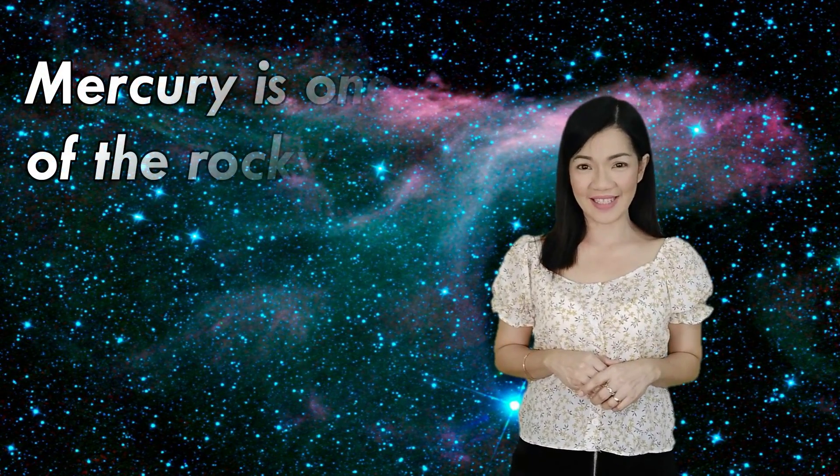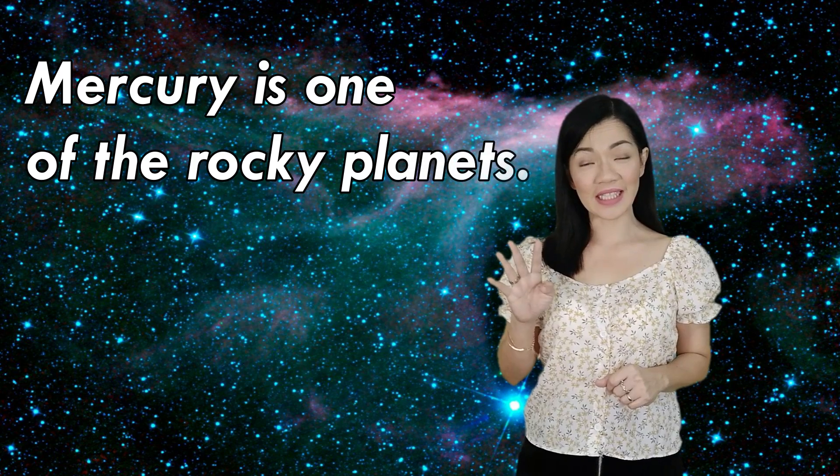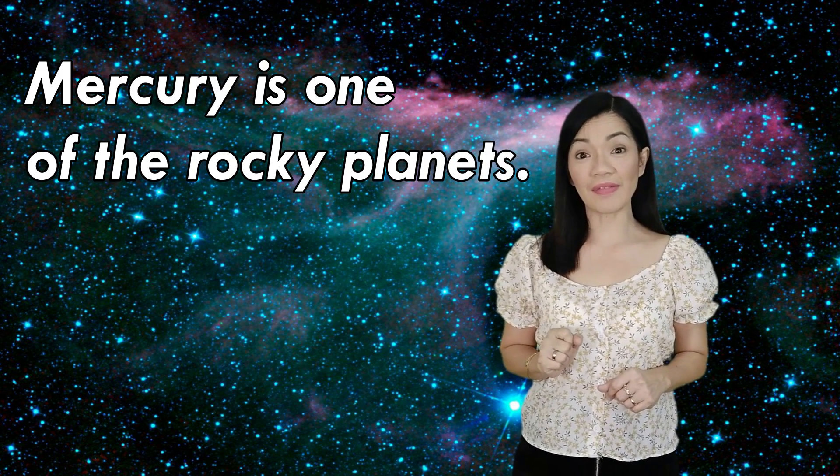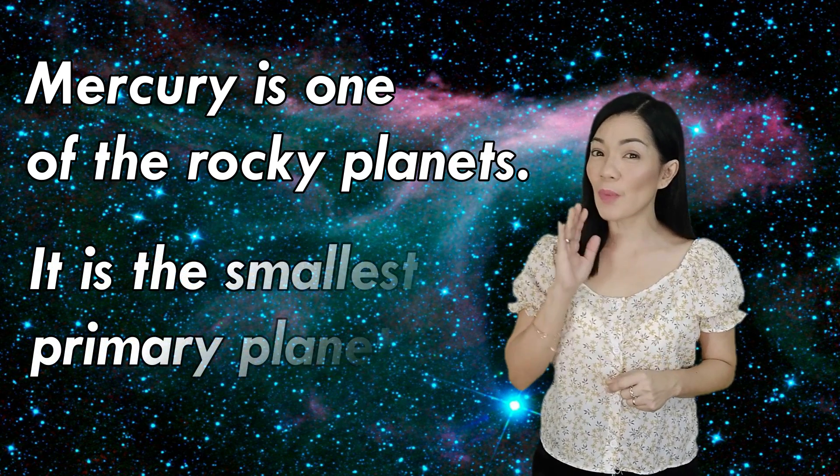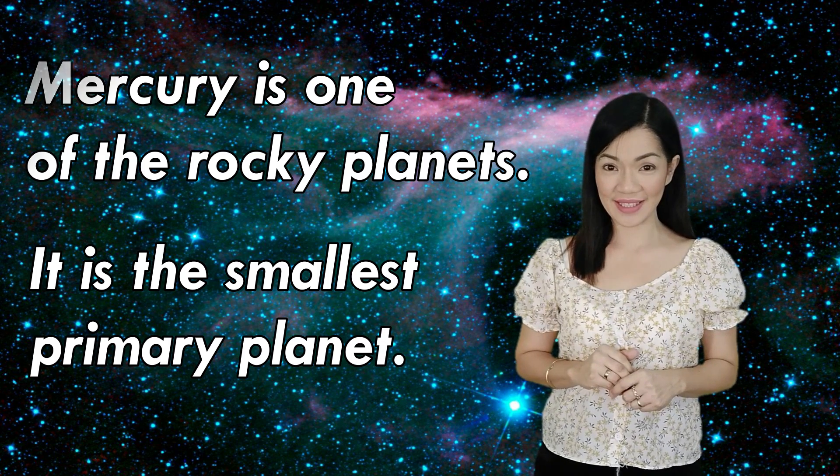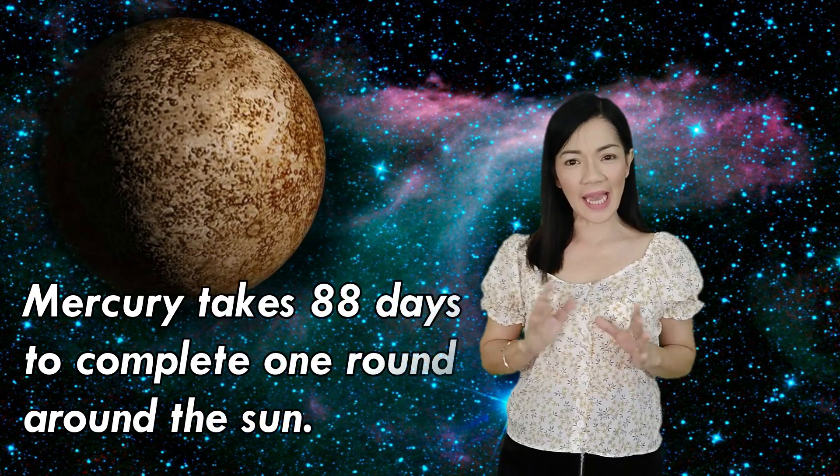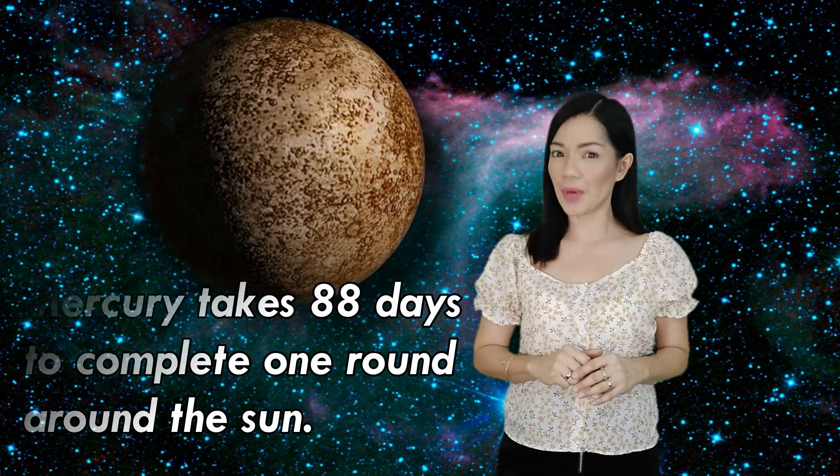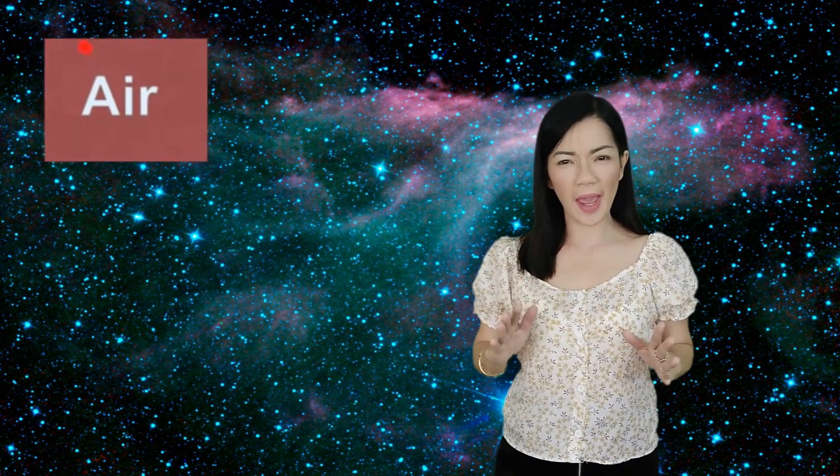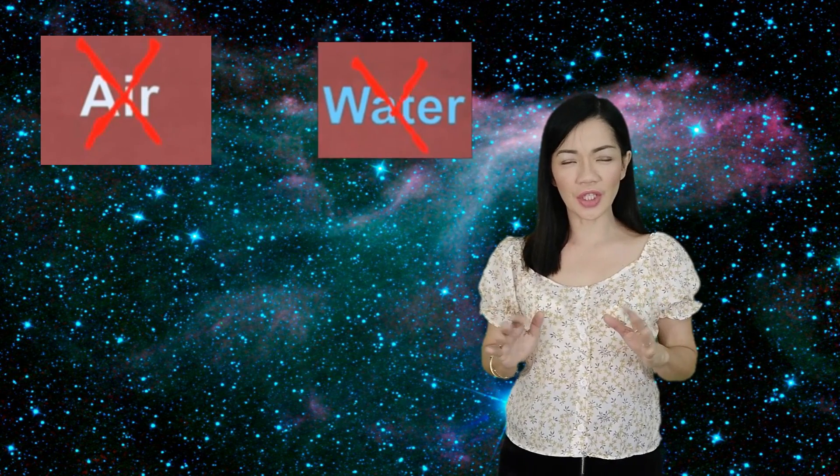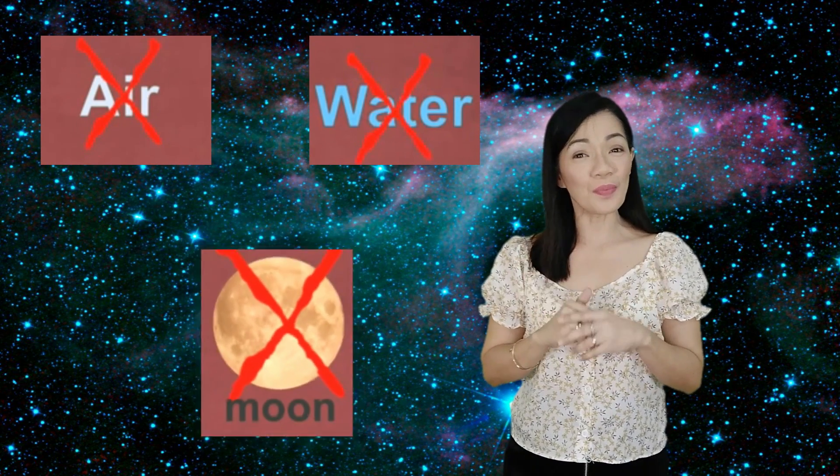Mercury is one of the rocky planets. There are four rocky planets and Mercury is one of them. And Mercury is the smallest primary planet. Mercury is so much smaller than any other planet. Mercury takes 88 days to complete one round around the sun. There is no air, no water, and also there is no moon on Mercury. You wouldn't want to live there.